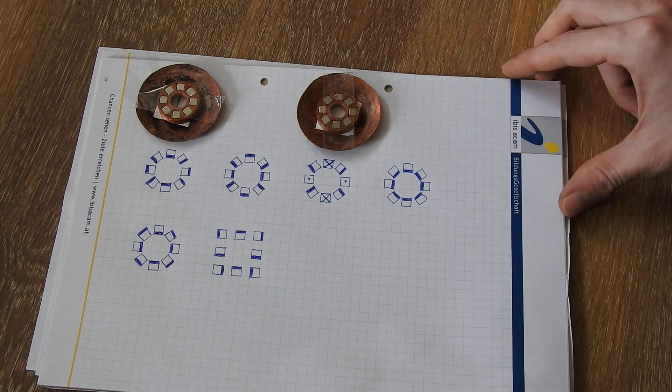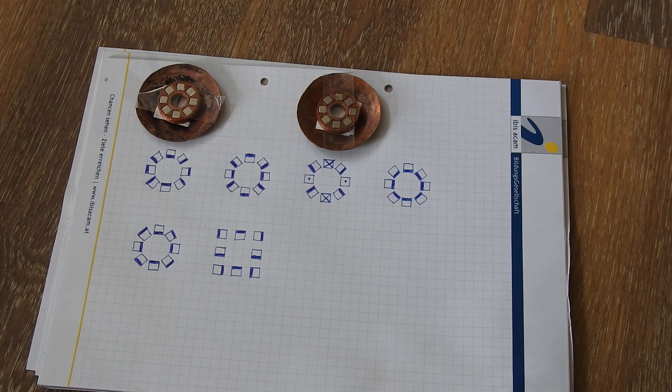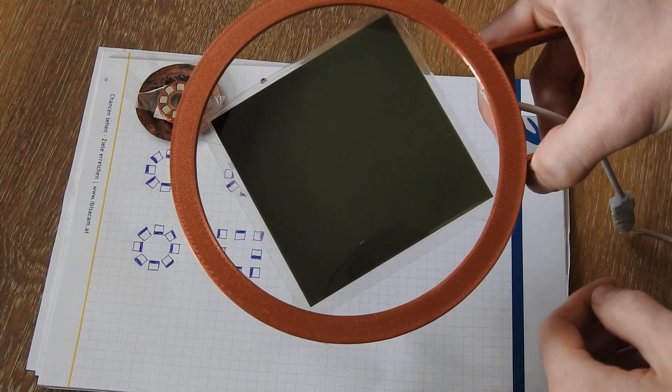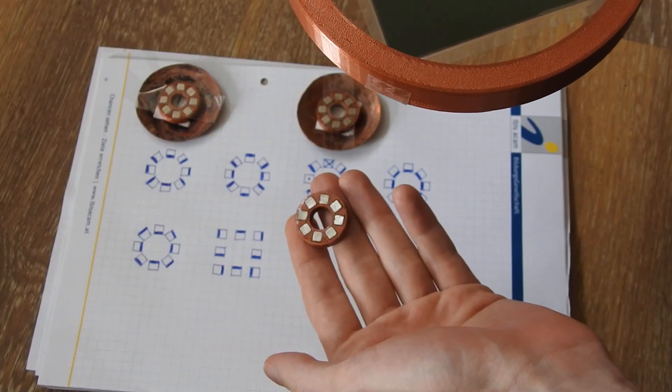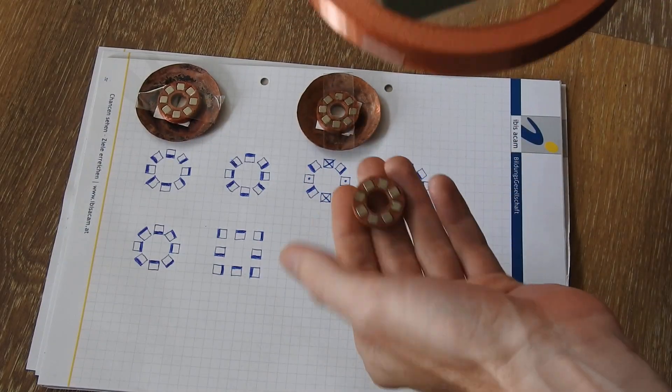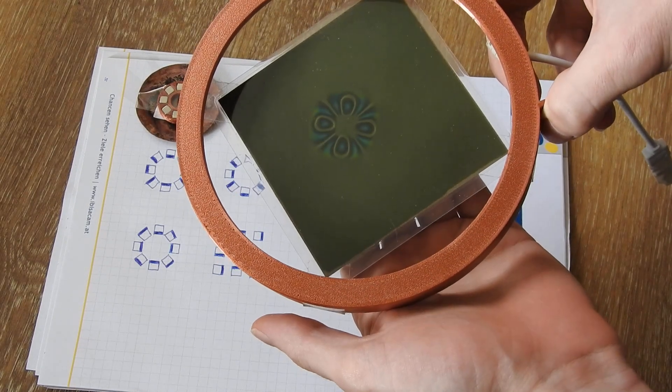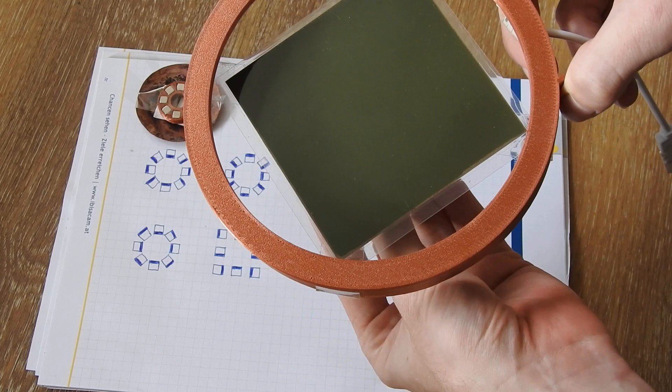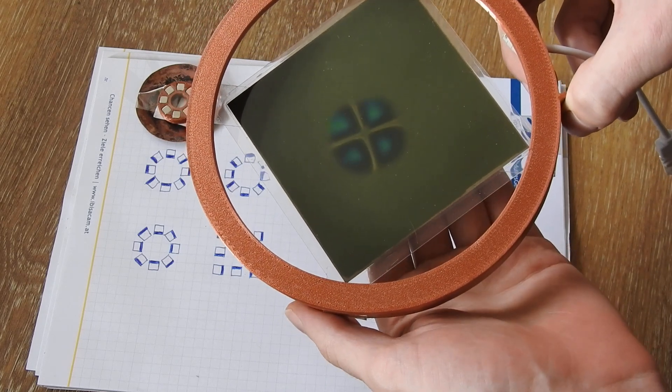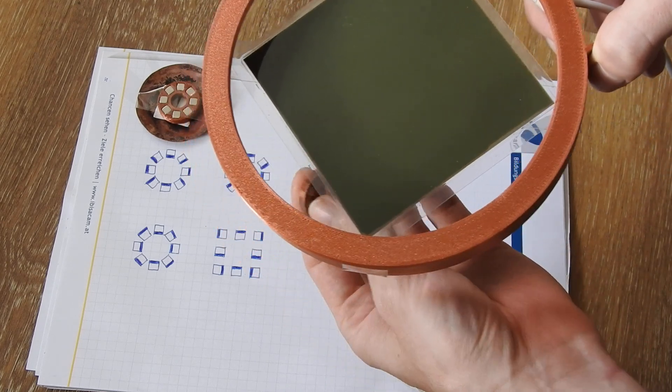To show you what I mean with this, I will take my field viewer that you see here. Here I have just the same arrangement like here. So if I view this from the weak side it looks like this, and if I view it from the strong side it looks like this.